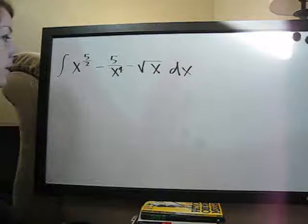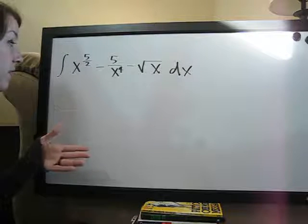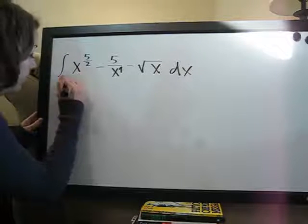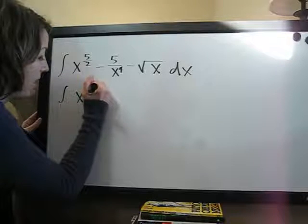Okay, so the first thing we're going to do is try to simplify this. x to the 5 halves is going to stay the same.